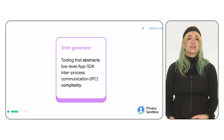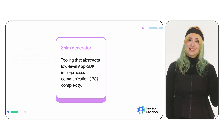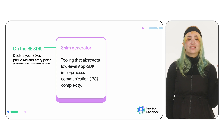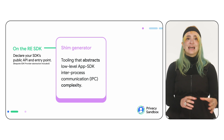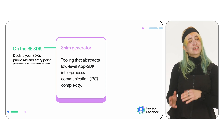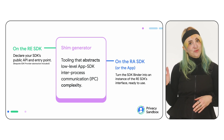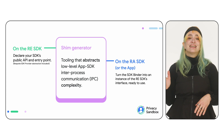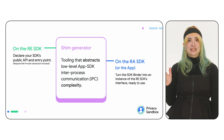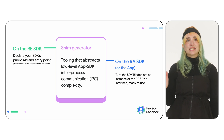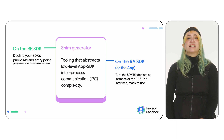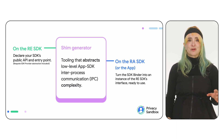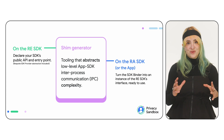How does it do that? In two ways. One, on the RE-SDK, the shim libraries provide annotations so that SDKs can define their API, and they generate a bespoke SDK provider. Two, on the RE-SDK, they create the mechanism to turn this binder into the actual SDK's interface. And the best part? This process is handled at compile time, transparently for you.